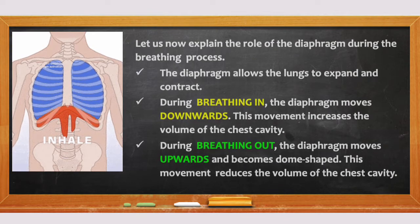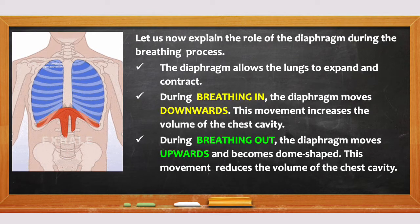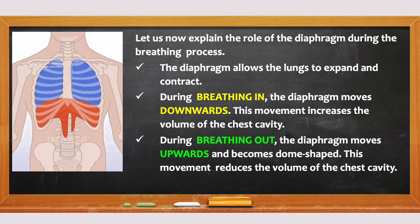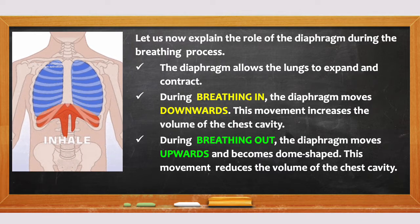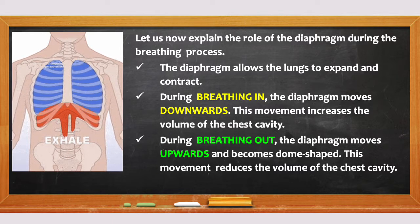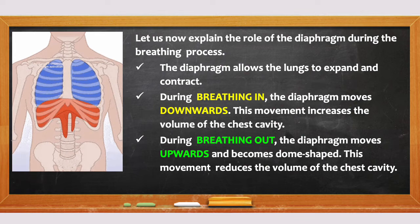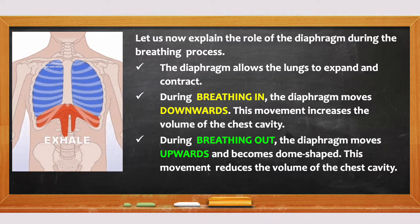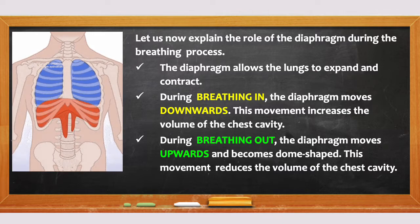Let us now explain the role of the diaphragm during the breathing process. The diaphragm allows the lungs to expand and contract. During breathing in, the diaphragm moves downwards. This movement increases the volume of the chest cavity. During breathing out, the diaphragm moves upwards and becomes dome-shaped. This movement reduces the volume of the chest cavity.